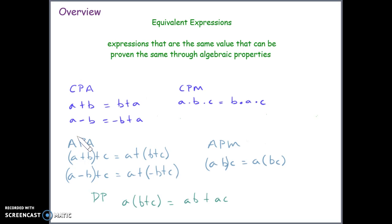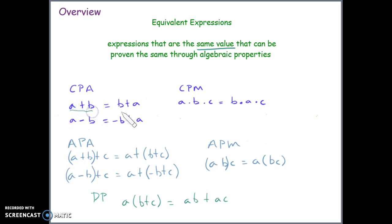Before we start, equivalent expressions are expressions that have the same value that can be proven the same through algebraic properties. Each of these examples for the properties we've learned has equivalent expressions. For example, a plus b is equivalent to b plus a because we can prove that through the commutative property of addition.